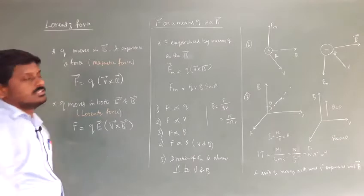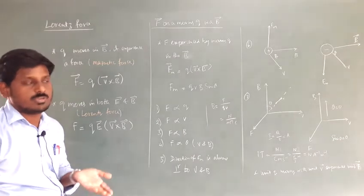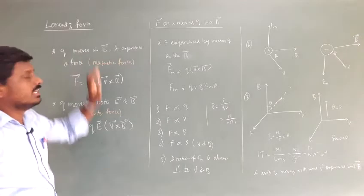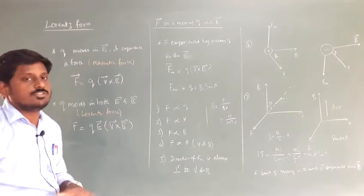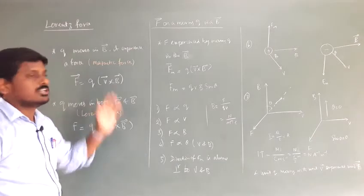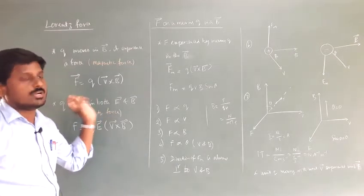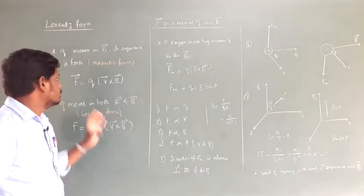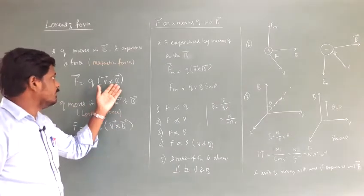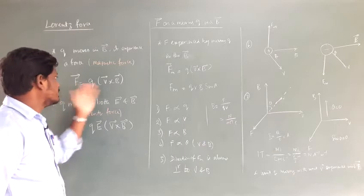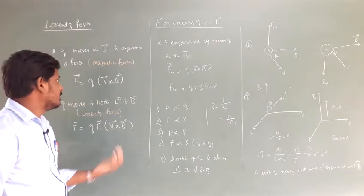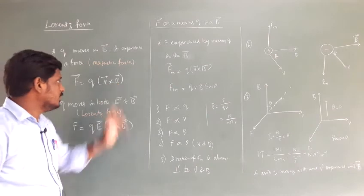A charged particle — which may be a positive charge or a negative charge — moving in a magnetic field experiences a force equal to F = q(v × B), where v is the velocity of the particle and B is the magnetic field. Both v and B are mutually perpendicular to each other, so it is a cross product, and the force F is also mutually perpendicular to both v and B.